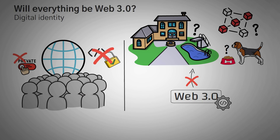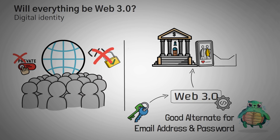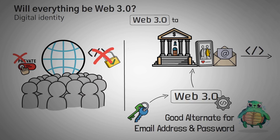Web3.0 will mostly be used for platforms and tools that you originally used an email address and password for. Instead, you will now use a public and private key to sign and verify things — things like banks, social media, and email accounts. These are the specific places where Web3.0 will shine because there's a real problem: these companies have your data and they're selling it, and that's what Web3.0 is intending to solve.